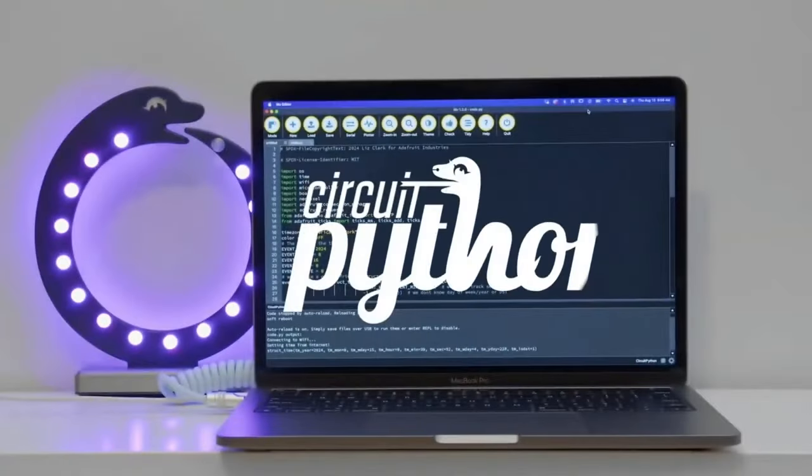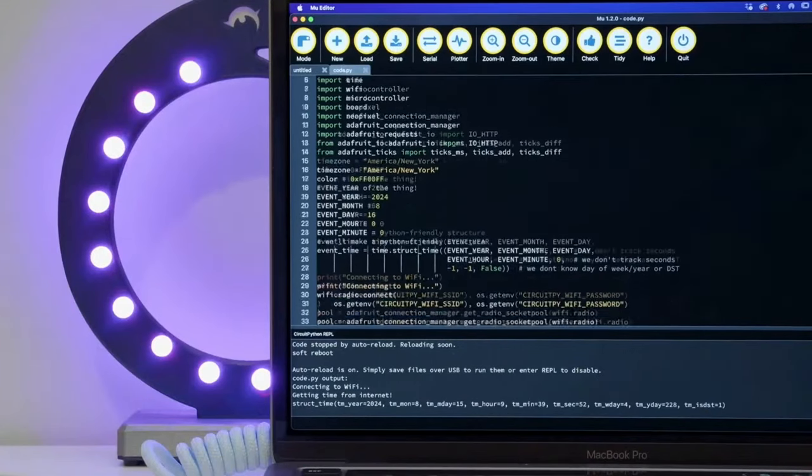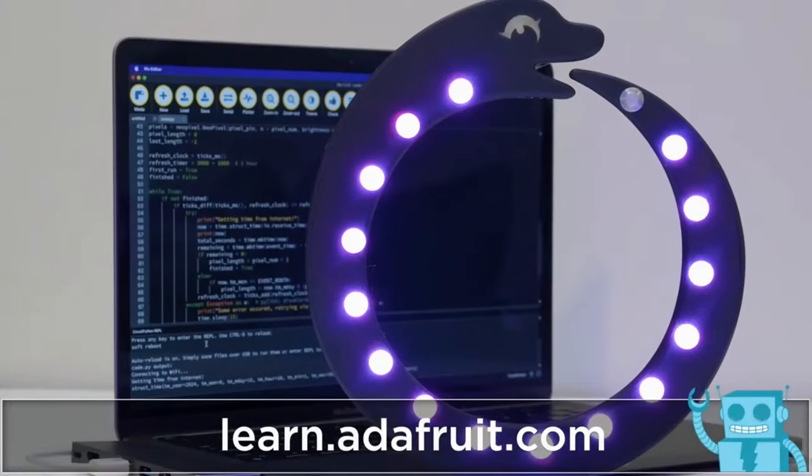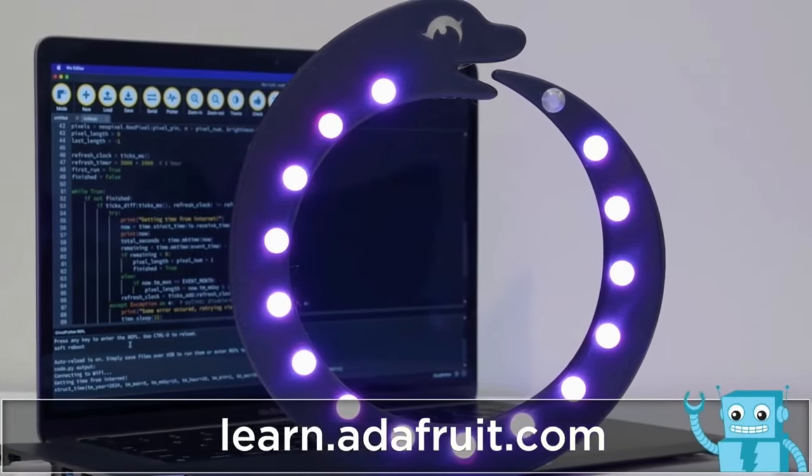The CircuitPython code uses AdafruitIO as a time server and sets up a timed event to light up all of the NeoPixel LEDs. You can edit the time zone in the top of the code and customize it to count down any special event or holiday. To get the code, files, and tutorial for building this project, visit the guide at learn.adafruit.com.